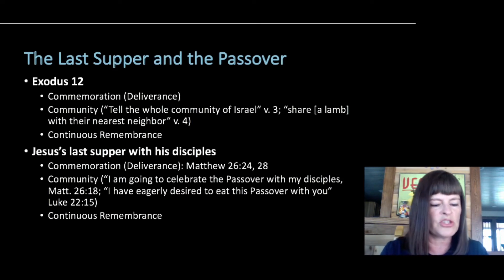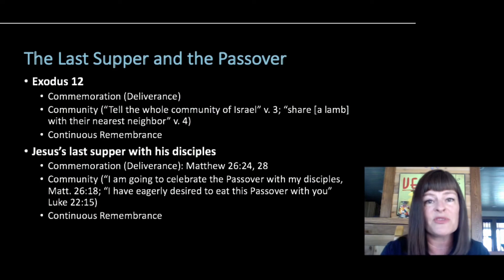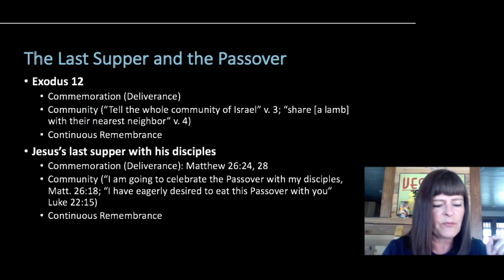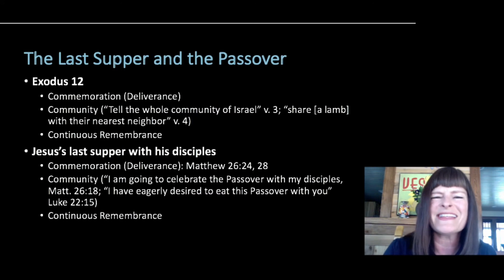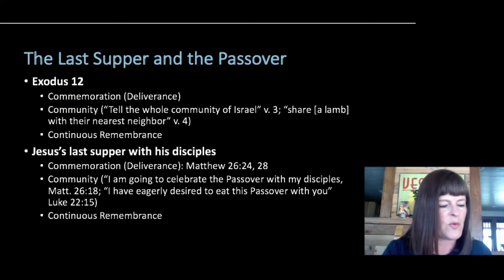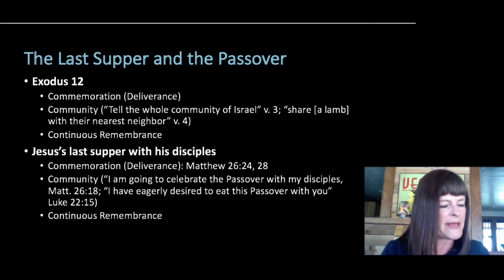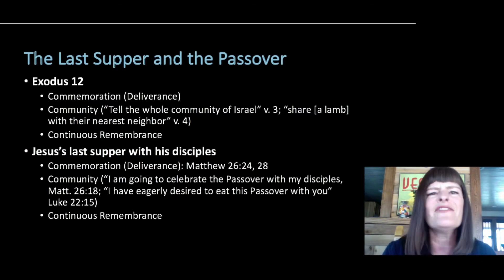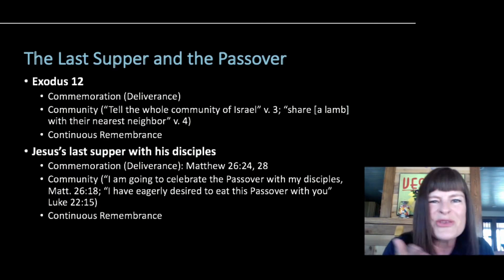Looking at Matthew 26, verses 24 and 28, we see that same emphasis on commemoration and the role of blood. Jesus says, 'This is my blood of the covenant, which is poured out for many for the forgiveness of sins' — the same idea of blood and deliverance tied to the Passover. On community, he says 'go into the city and tell him the teacher says I am going to celebrate the Passover with my disciples at your house.' In Luke, when the hour came, 'Jesus and his disciples reclined together at the table' and he said, 'I have eagerly desired to eat this Passover with you before I suffer.'